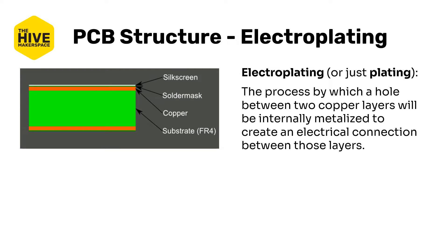I want to talk briefly about something called electroplating. I won't go too much into detail about the fabrication process during these videos, but there is one process that does need to be understood, and that is electroplating. Electroplating describes the electrochemical process by which copper can be grown onto a variety of surfaces, and it is the most common way to add copper onto the substrate in the PCB world.